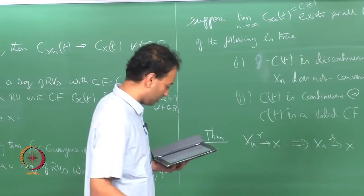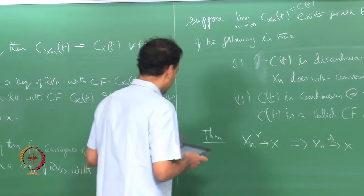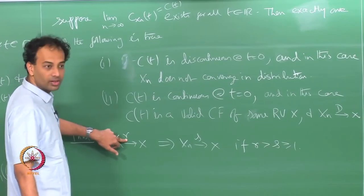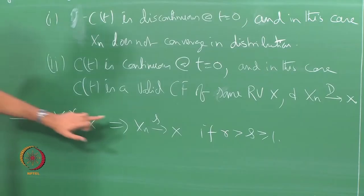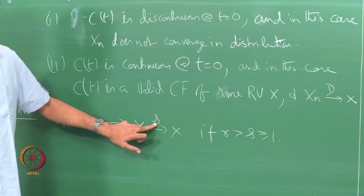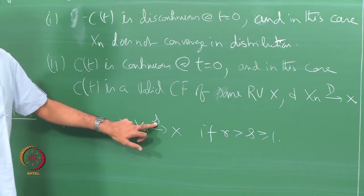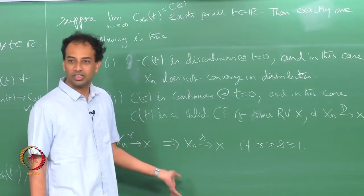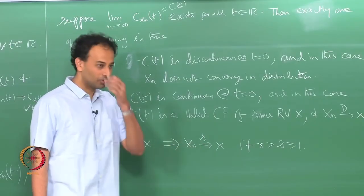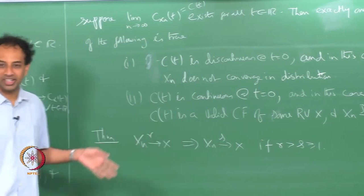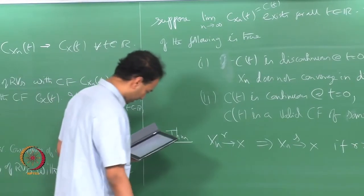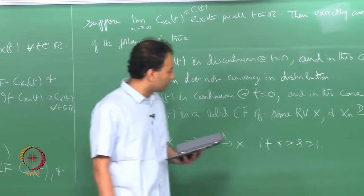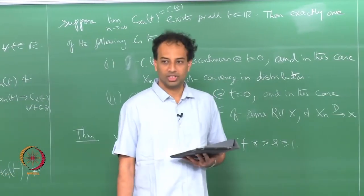There is one result that is outstanding — I should have done this in the previous class and forgot. This concerns convergence in rth mean: the theorem states that if x_n converges to x in the rth mean, then x_n converges to x in the sth mean, provided r is greater than s and s is greater than or equal to 1.